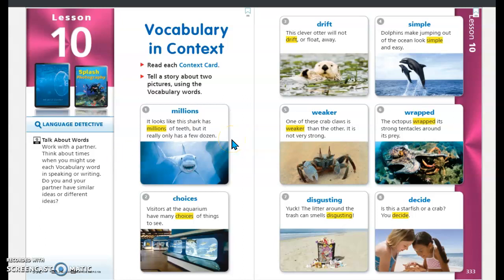Number four is simple. Dolphins make jumping out of the ocean look simple and easy. Number five is weaker. One of these crab claws is weaker than the other. It is not very strong.